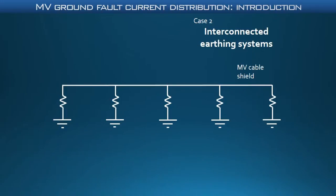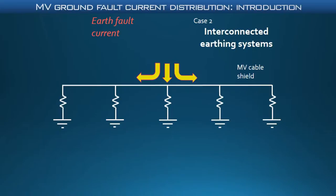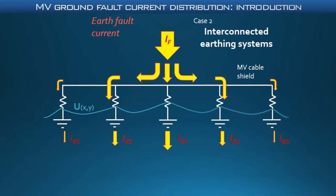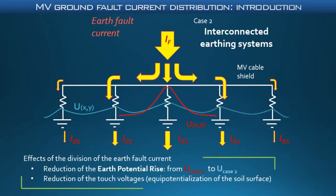Vice versa, if several earthing systems are interconnected through, for example, MV cable shields, the fault current is divided among all these earthing systems. The potential profile on the surface in this case is represented by the blue line. Thanks to the reduction of the current injected by the faulted substation, the earth potential rise — that is, the voltage between an earthing system and the reference earth while the earthing system is injecting a fault current into the soil — is reduced, as well as the touch voltage.